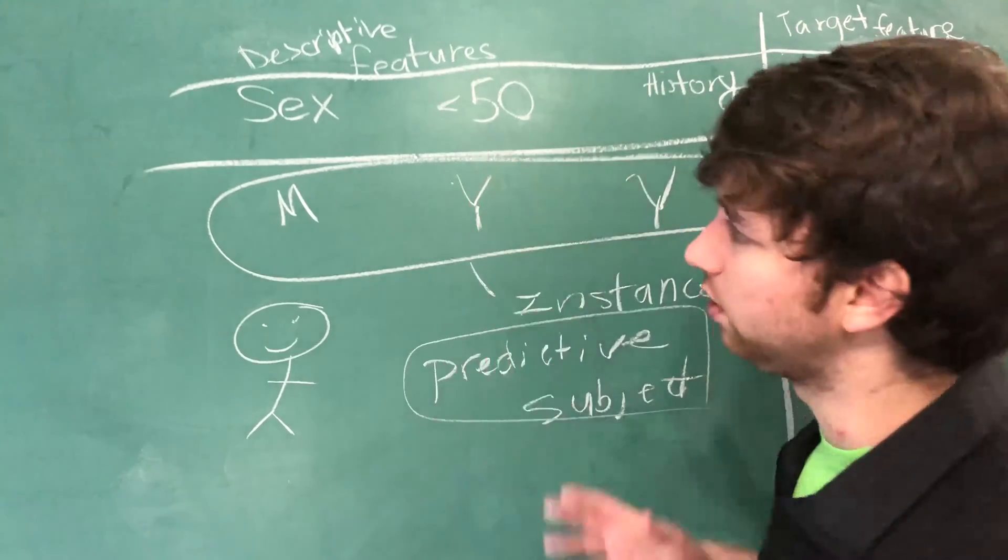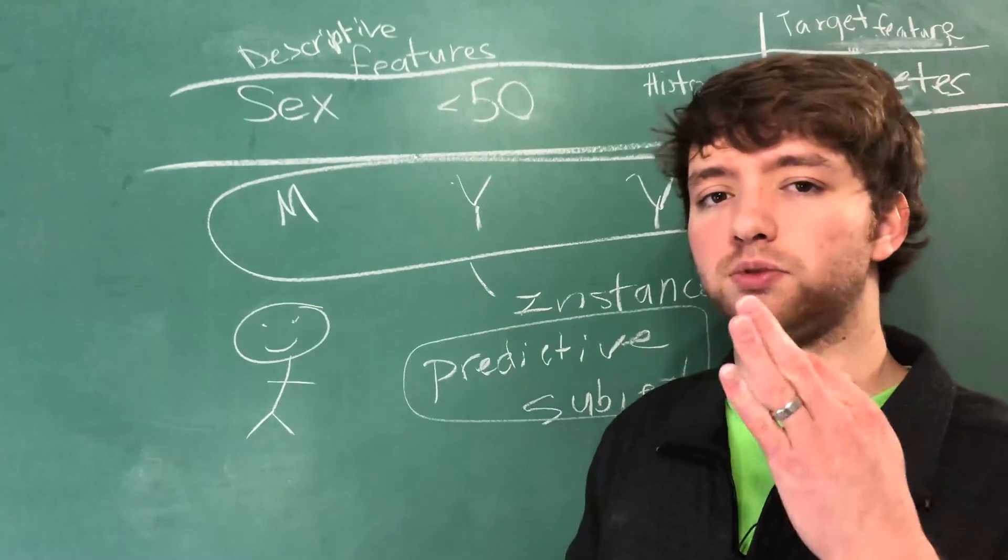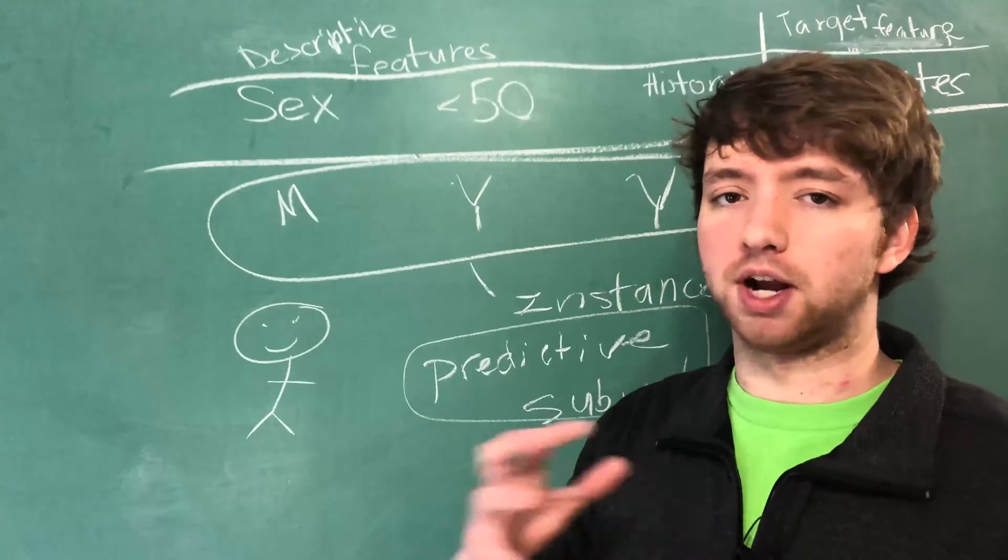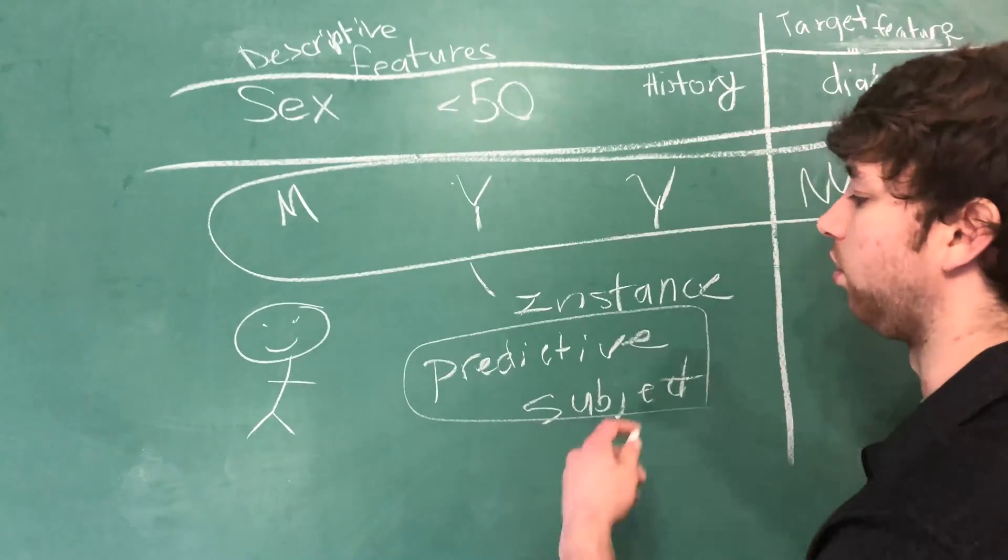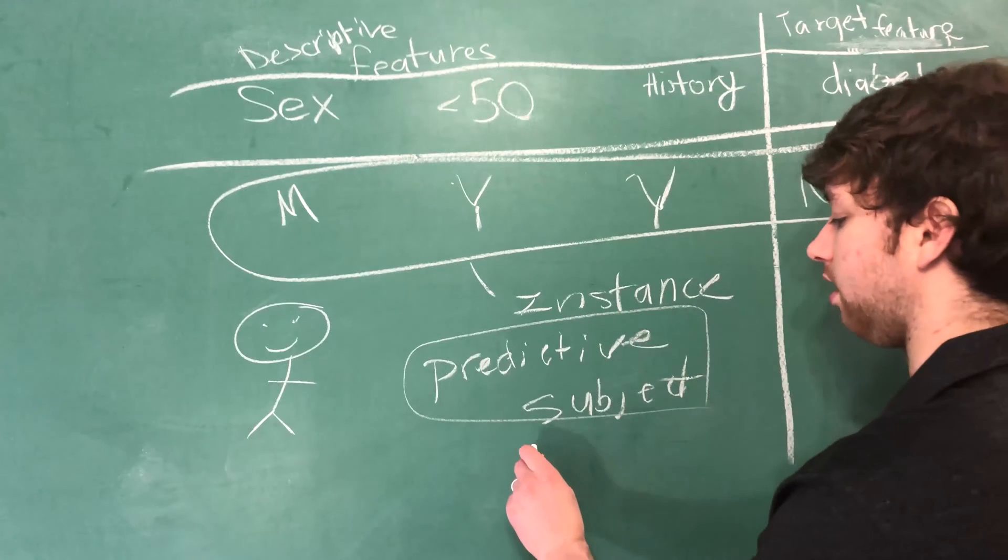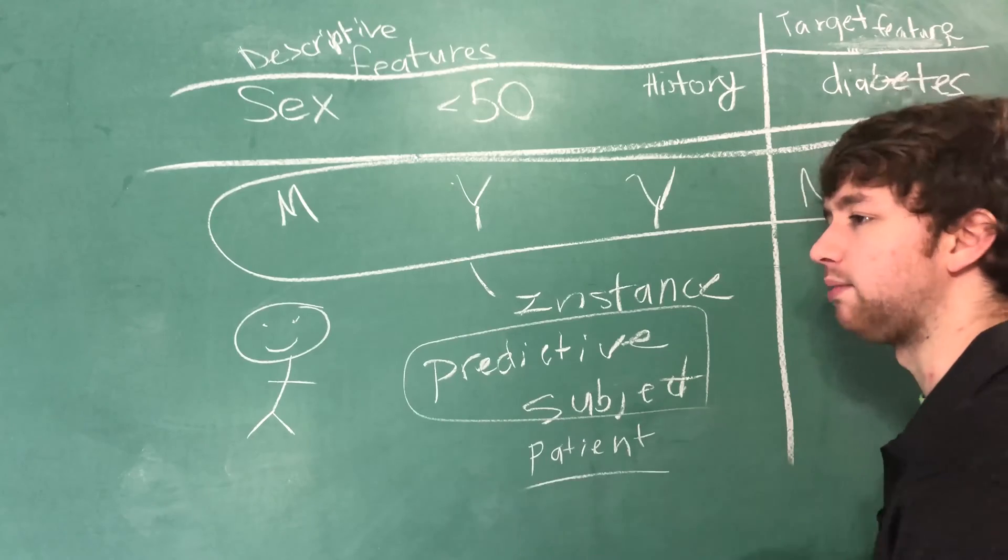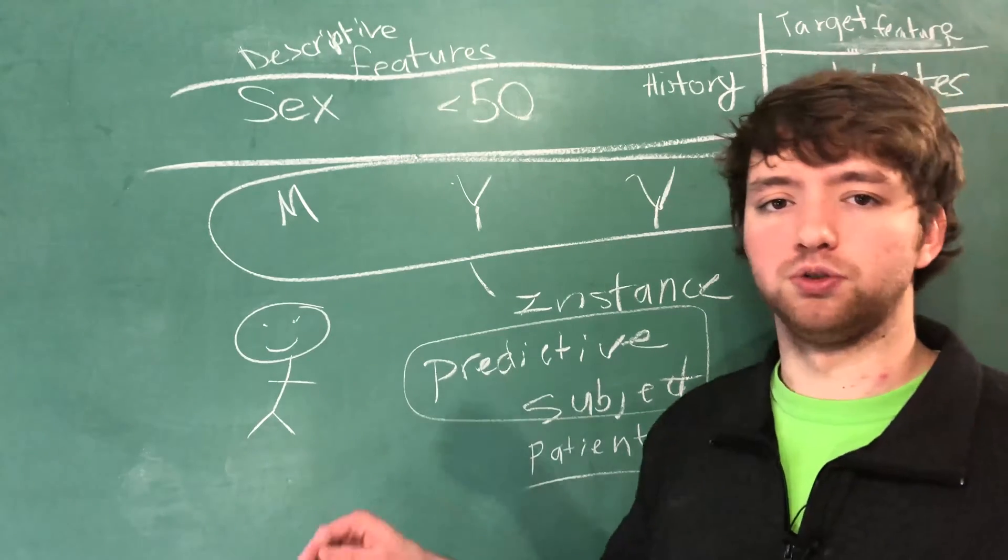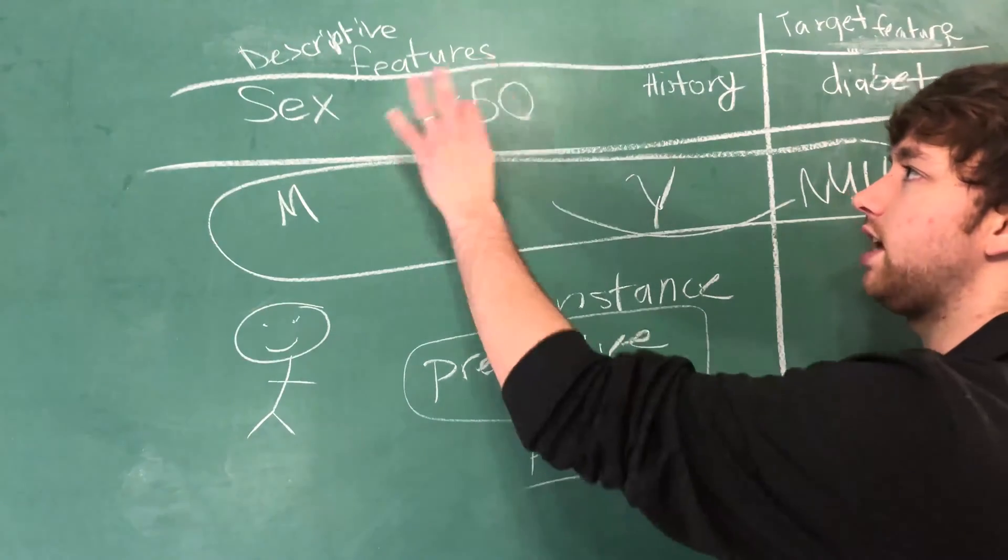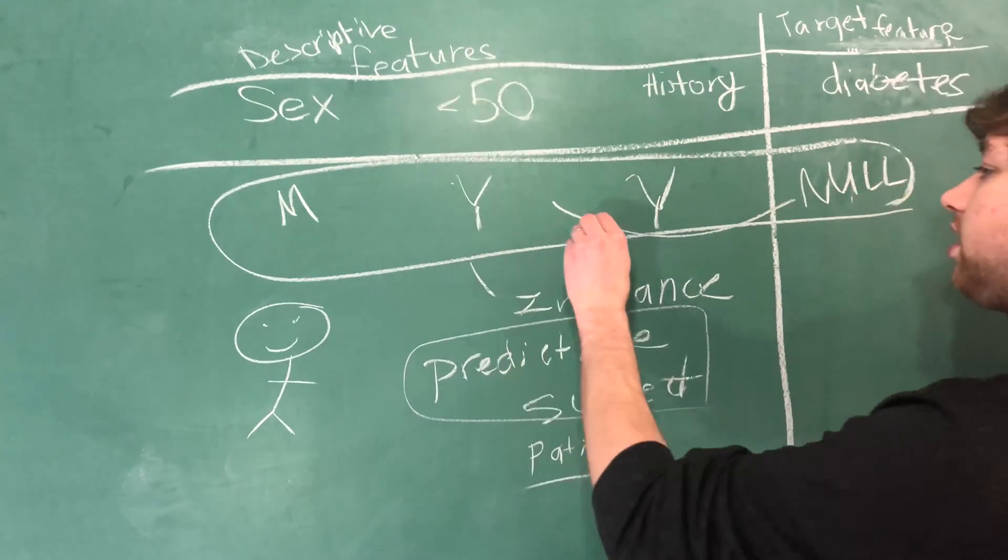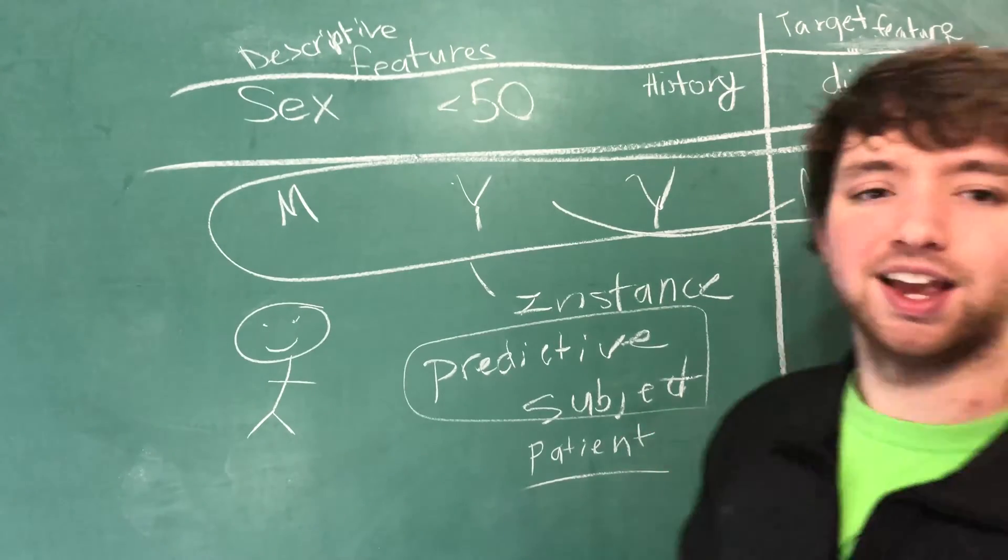Additionally, now that we have these descriptive features, we can start thinking about what are the descriptive features that are going to be the most valuable for my situation. What descriptive features are going to be best for our predictive subject of a patient or a person? You can start thinking about what things are going to somehow correlate with diabetes. Machine learning, all it is, is taking descriptive features and finding correlation with the target feature. So that's the analytics base table.